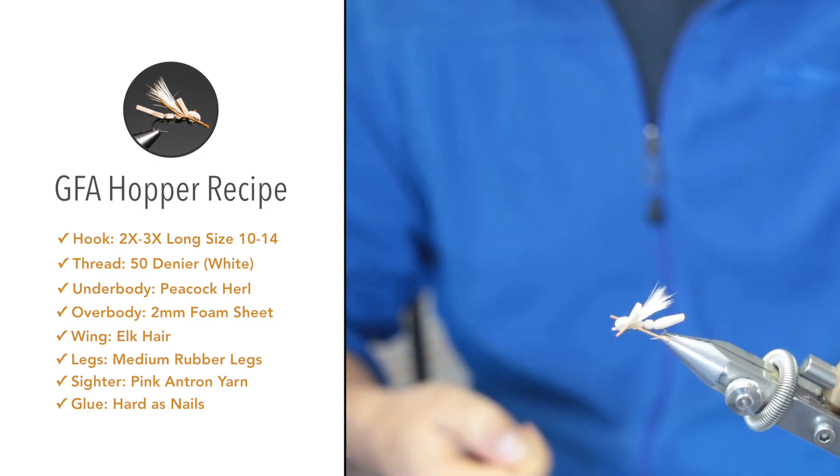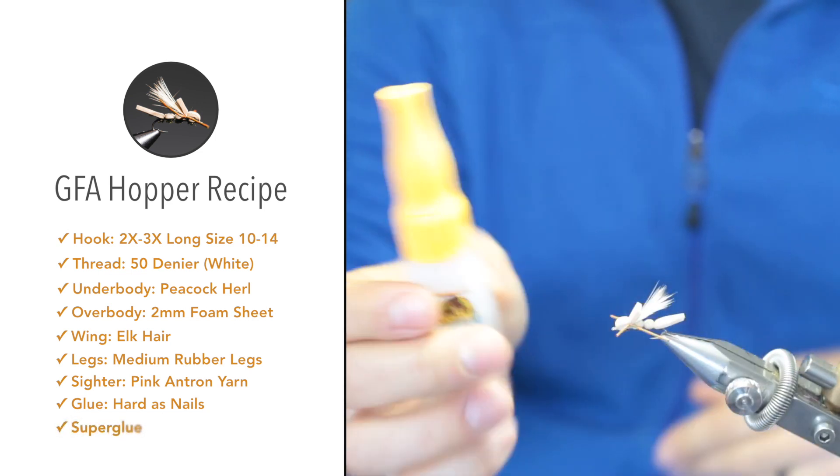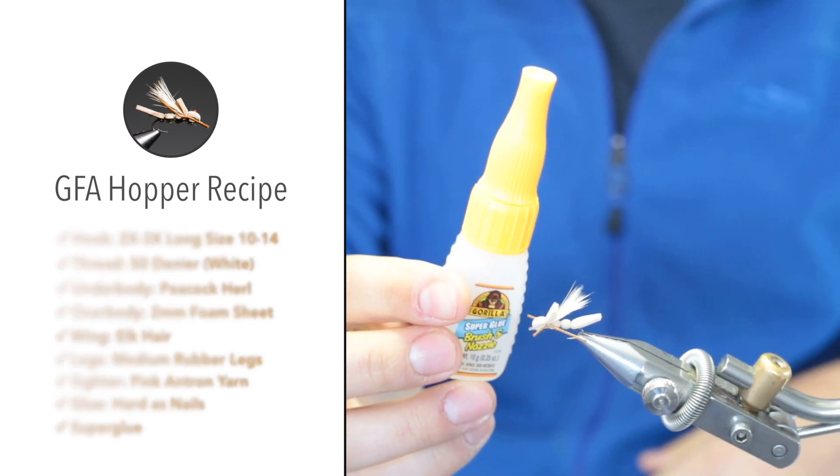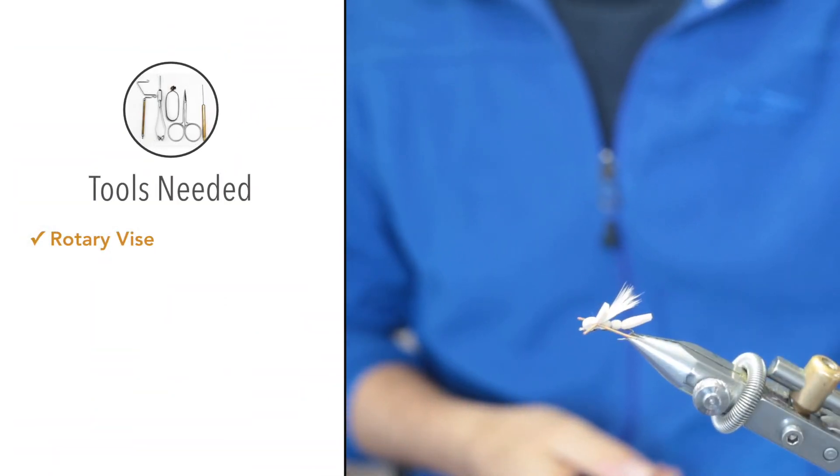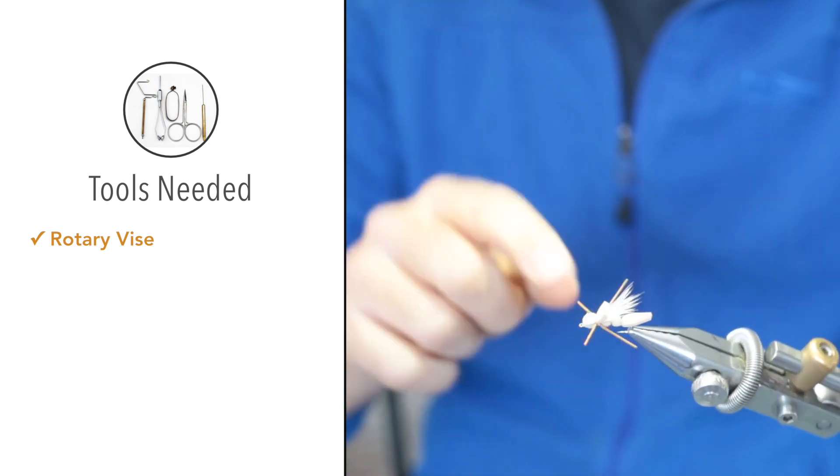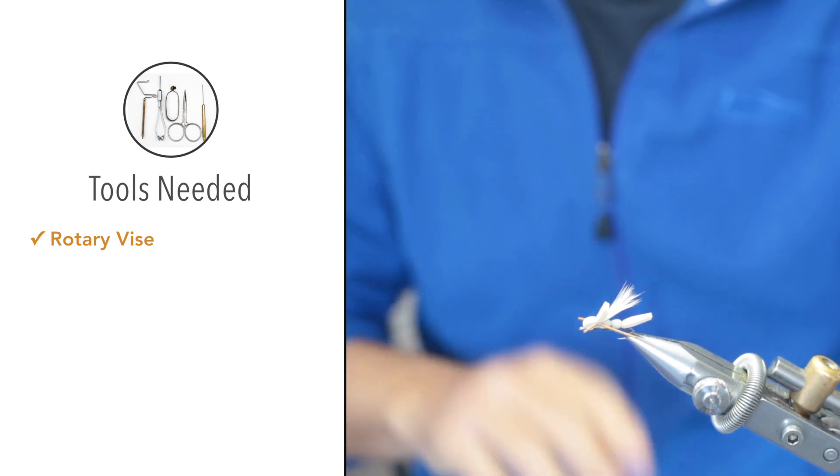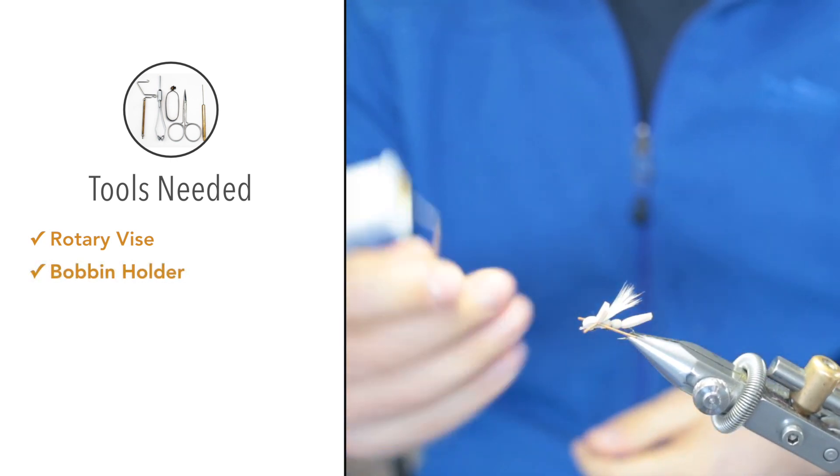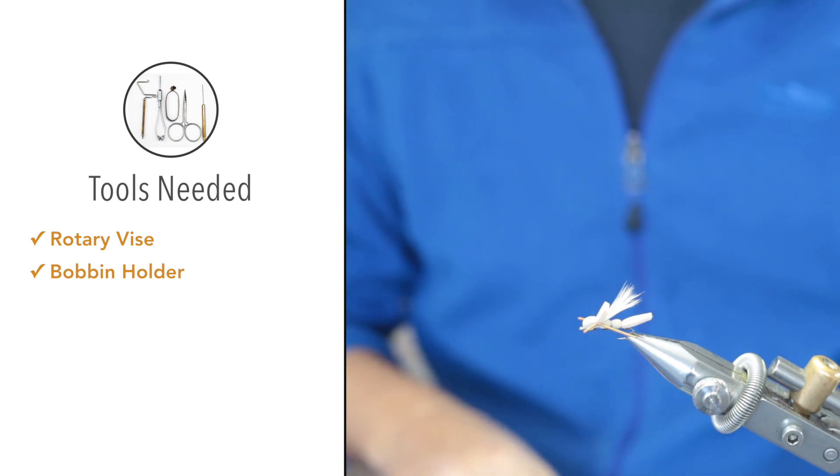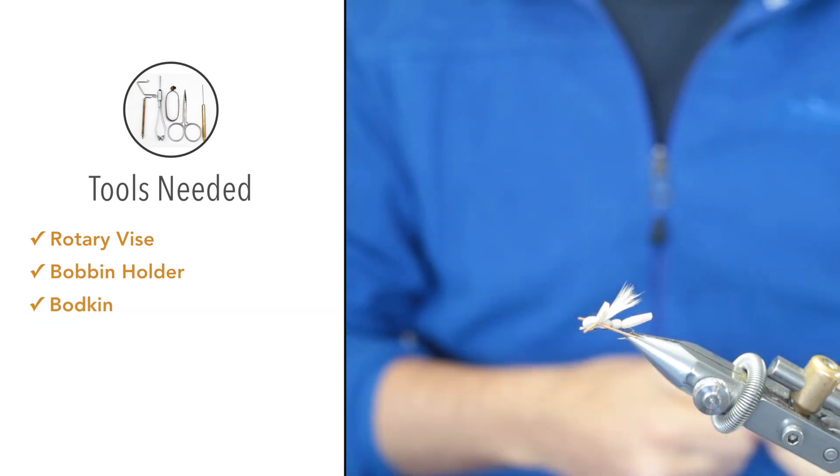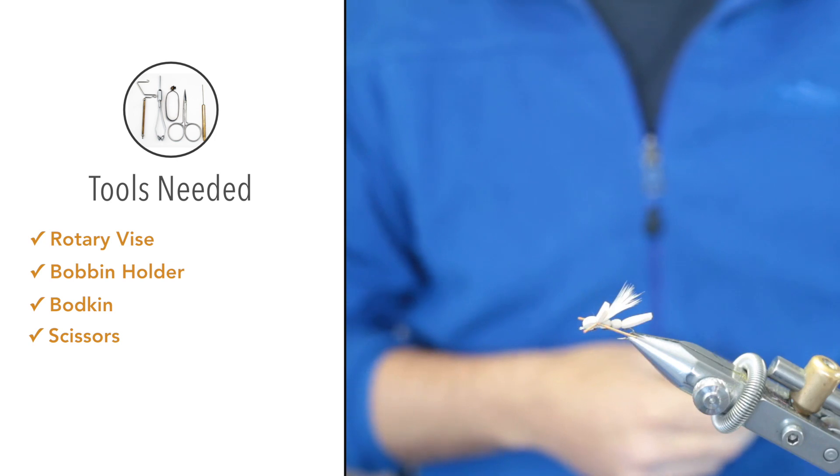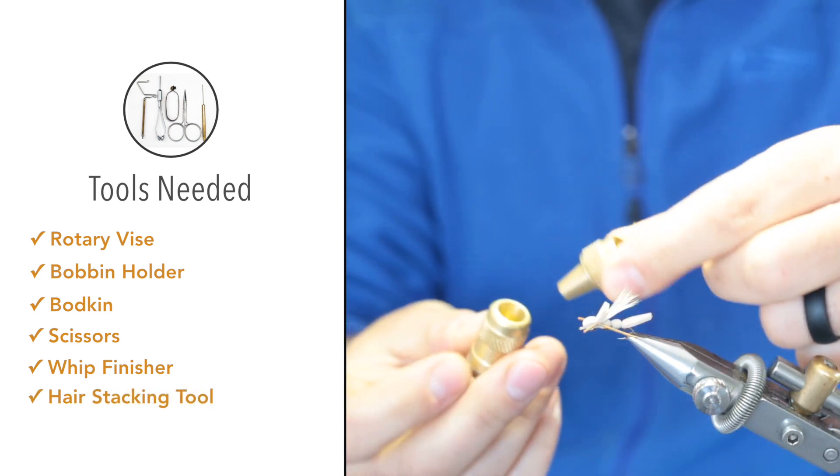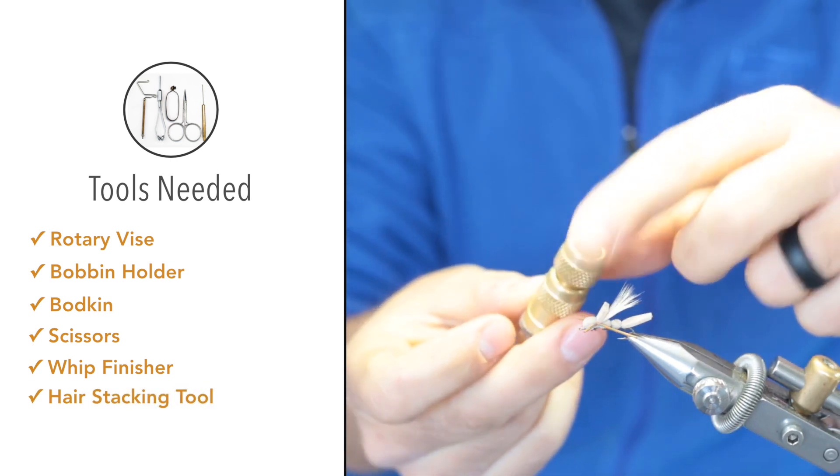Tools that you'll need: a vise, rotary vise really helps especially when you are sealing the fly. It's not entirely necessary but it does help. A bobbin holder for your thread, a bodkin to apply some of that Sally Hansen's, a pair of scissors, a whip finishing tool, and a hair stacker. The hair stacker looks like this and is just used to level the tips of the hair wing.